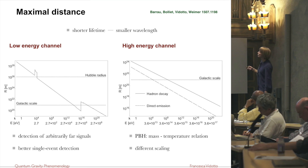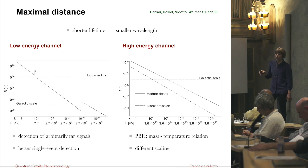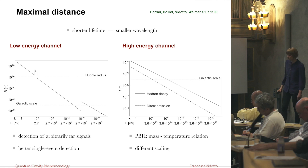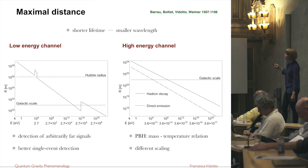You may notice some thresholds in this graph. One corresponds to the optical band where we have larger telescopes, so detectability grows. Another threshold is due to the fact that we enter beyond QCD confinement, so there is production of new particles — in particular, decay of pions — which raises the photon production in the process.